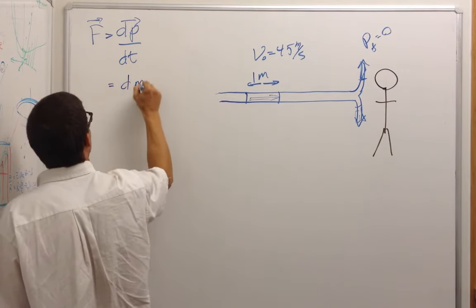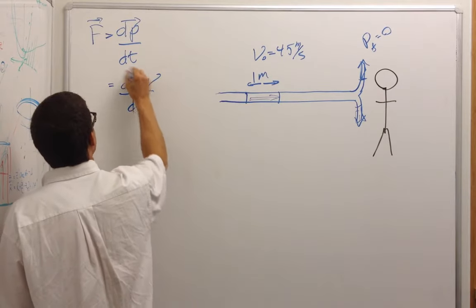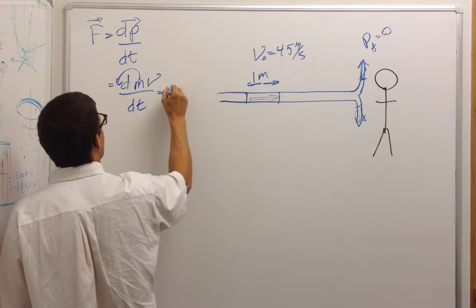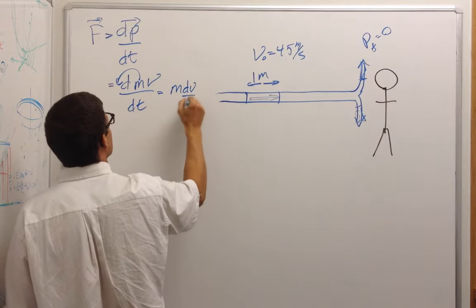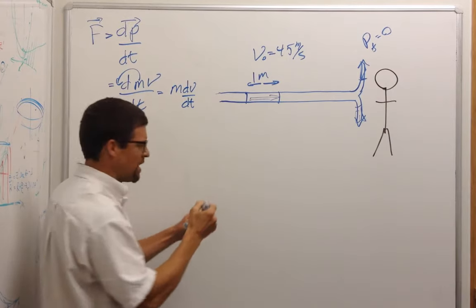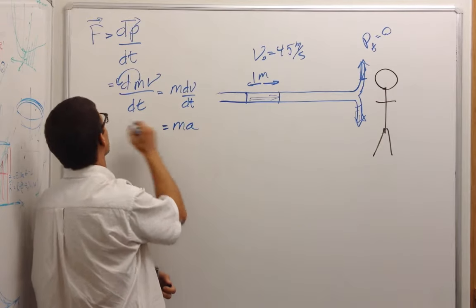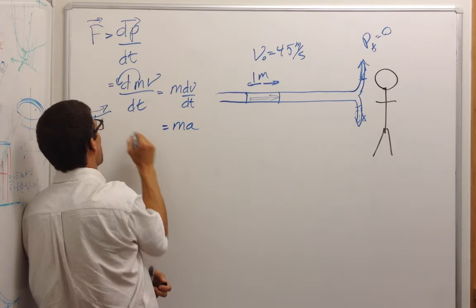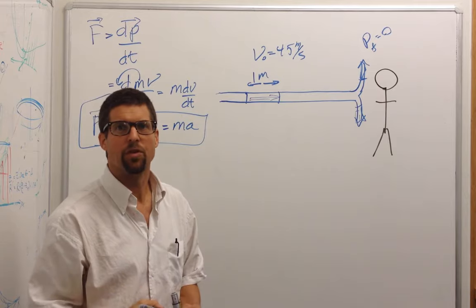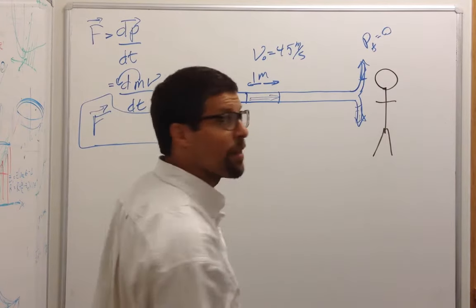Momentum is just mass times velocity. If the mass stays constant, we can pull that out and we have m dv dt. Well, dv dt is the rate of change of velocity is acceleration, is mass times acceleration. So this equation is not unknown to us. And so now it just boils down to some math.